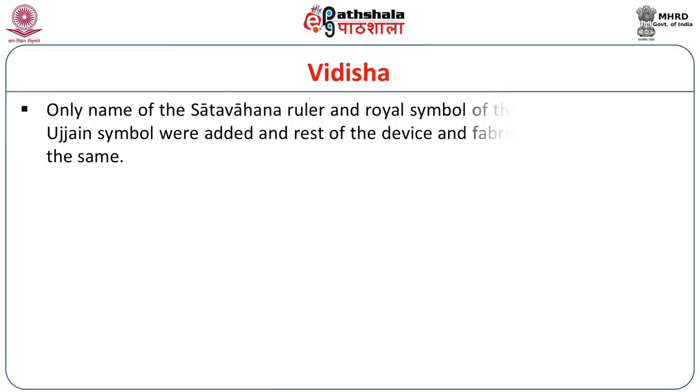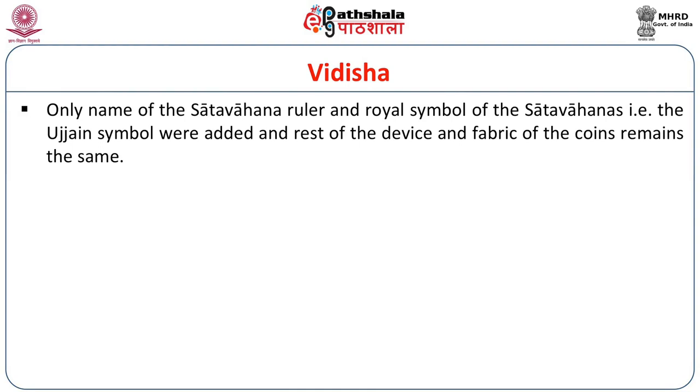The pre-Satavahana phase almost continues in the Satavahana issues of Vidisha. Only the name of the Satavahana ruler and their royal symbol — the Ujjain symbol — were added; the rest of the device and fabric of the coin remains the same. When you look at the coins of the Satavahanas from this region, you cannot identify them very easily because they just resemble the coins of the local rulers of Vidisha. The major difference is the Ujjain symbol, which is the royal symbol of the Satavahanas, and very interestingly the Ujjain symbol has been merged with the Torana symbol here.